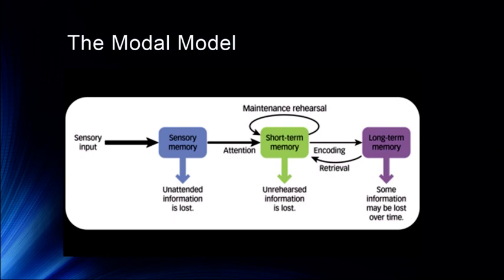Let's introduce the Atkinson-Schiffrin model, or the modal model. It is an information processing model — information comes in and gets processed through memory stores. We start with sensory memory, which is a raw copy of the stimulus. For visual memory, this is called iconic memory. Right now you're looking at this screen — that sensory input goes into sensory memory. Whatever you're directing your attention towards is what you encode, and that gets transferred to short-term memory.